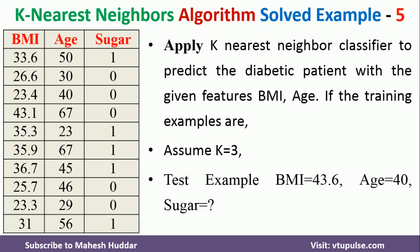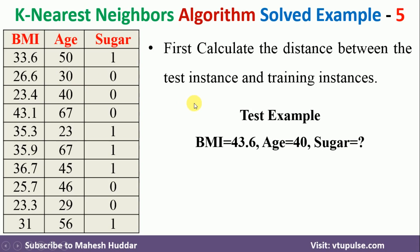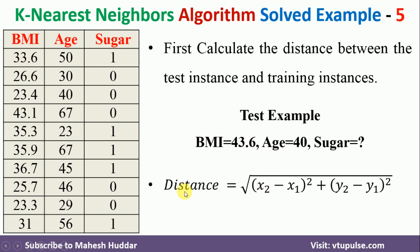First, we need to calculate the distance between this new example and all the training examples. To calculate the distance, we use the Euclidean distance: distance = square root of (x2 − x1)² + (y2 − y1)². We consider 43.6 and 40 as x2 and y2, which are fixed. x1 and y1 will change in every iteration — in the first iteration x1 = 33.6 and y1 = 50; in the second, x1 = 26.6 and y1 = 30, and so on.